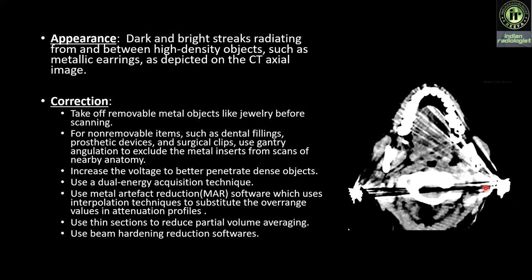Correction: take off removable metal objects like jewelry before scanning. For non-removable items like dental implants, prosthetic devices, and surgical clips, use gantry angulation to exclude the metal inserts from scans of neighboring anatomy. Increase the voltage to better penetrate dense objects. Use a dual energy acquisition technique. Use metal artifact reduction software which uses interpolation techniques to substitute the overranged values in the transmission profile. However, the usefulness of the software is sometimes limited because although the streaking distant from the metal implant is removed, there remains a loss of detail around the metal-tissue interface. Also use thin sections to reduce partial volume averaging and beam hardening reduction software.